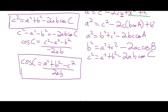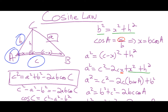For sine law, you only get one form: A over sine A equals B over sine B equals C over sine C, and you can flip it to work out an angle. If you know two sides and the included angle, or all three sides, use the cosine law — but only use it once, because it has a lot going on. Once you have that result, you'll have a known pair and can switch to the much simpler sine law.